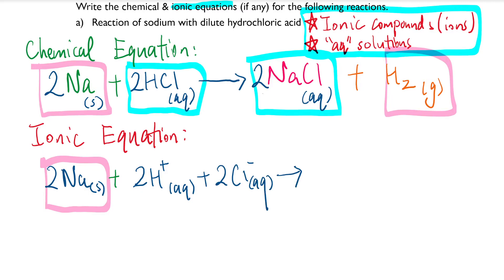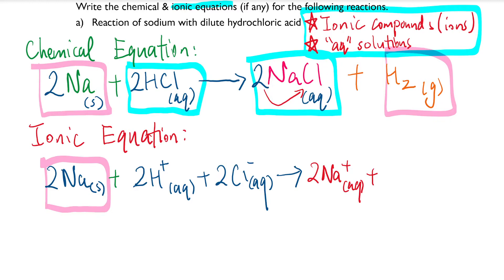Do the same thing on the other side. For 2NaCl, you still have 2Na⁺ (aq) and 2Cl⁻ (aq) — don't forget the imaginary bracket means the coefficient applies to all ions. Finally, hydrogen gas stays the same since it's a gas; if there's a coefficient, you keep it the same.